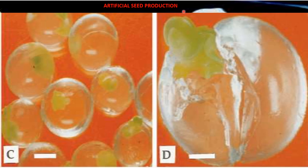Artificial seed production. Synthetic or artificial seeds are living seed-like structures — any totipotent cell such as somatic embryos or meristematic tips — which are artificially encapsulated by chemicals like hydrogel. They behave like true seeds if grown in soil and can be used as a substitute for true seeds, possessing the ability to convert into plants ex vitro or in vitro.